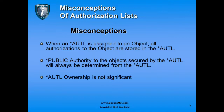Now the misconceptions — there are really three major misconceptions. One is that when an authorization list is assigned to an object, all of the authorizations to the object are going to be stored in the authorization list, meaning that all authorities to the payroll master file can be seen by looking at the authorization list. The second misconception is that the public authority to objects secured by the authorization list will be seen in the authorization list — so if the list says public exclude, that is the authority assigned to secured objects. The third misconception is that it doesn't really make any difference who owns an authorization list.